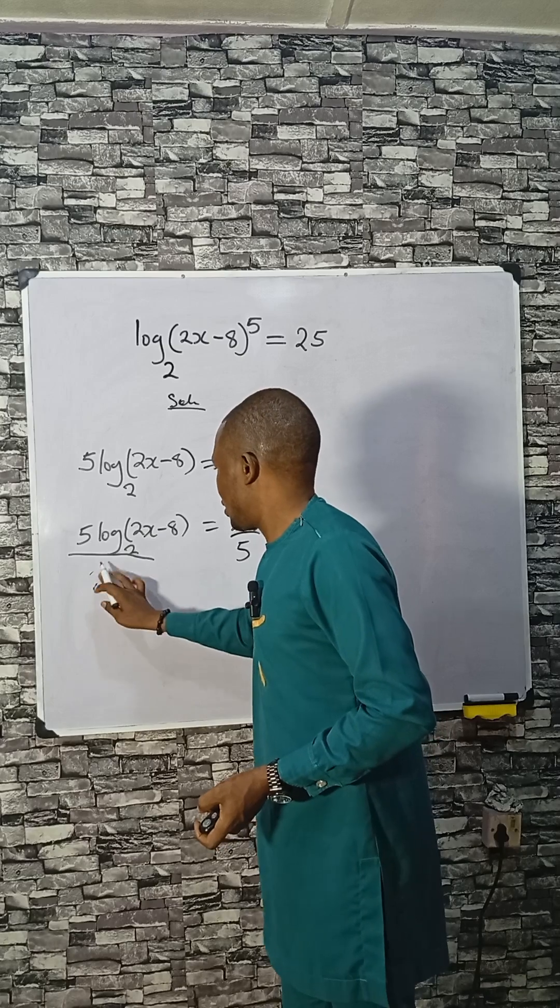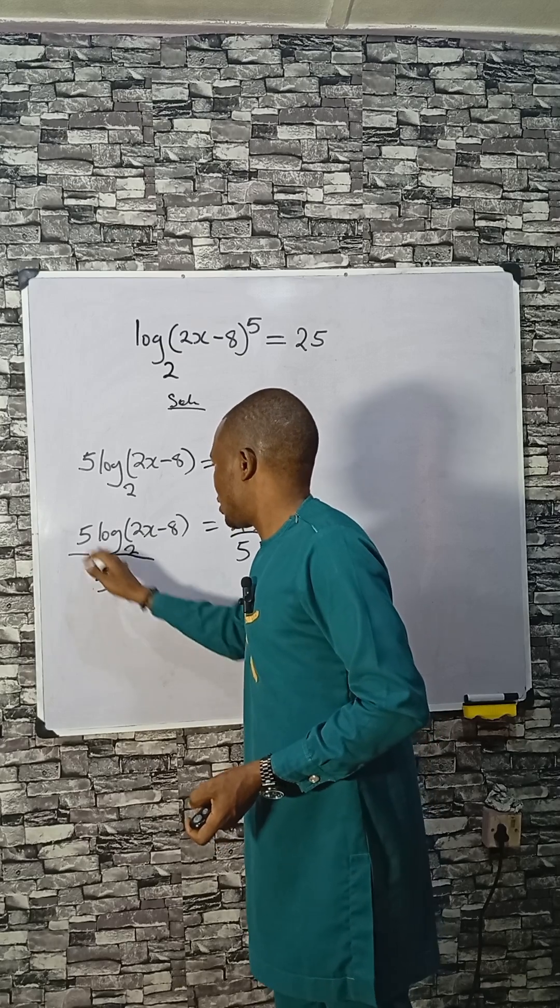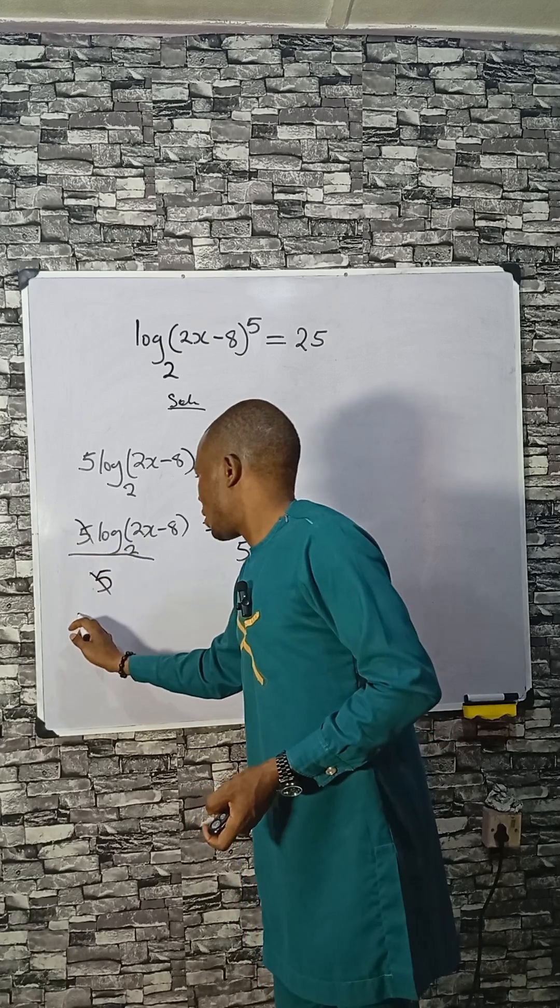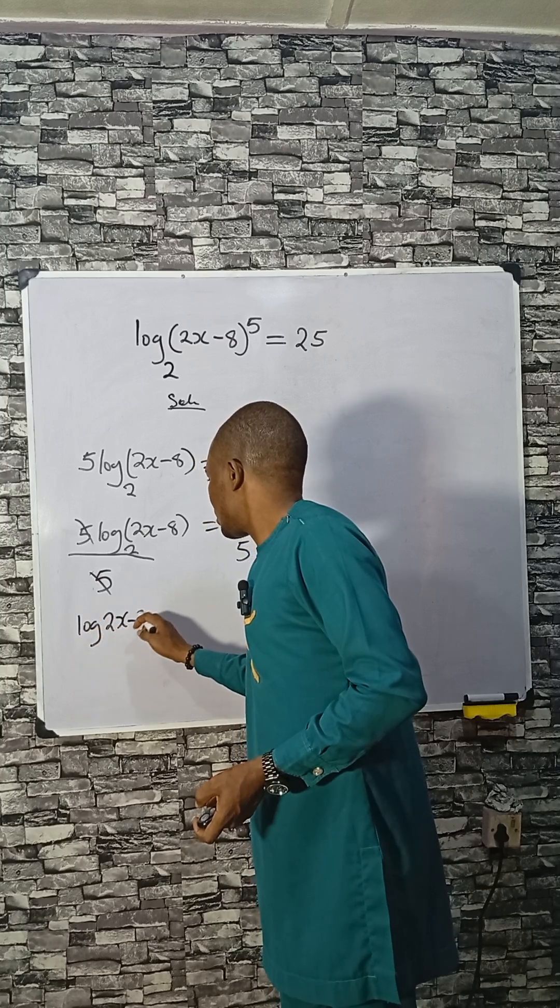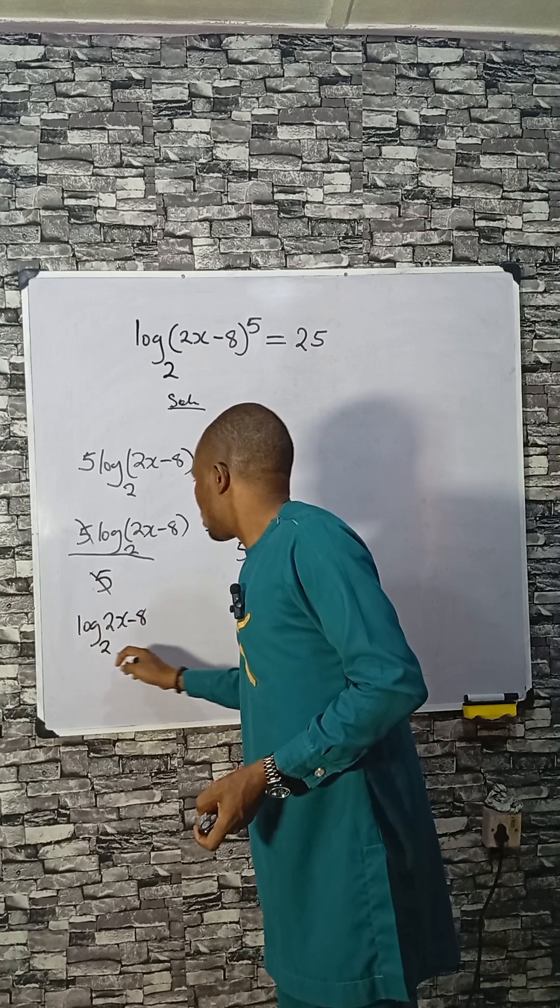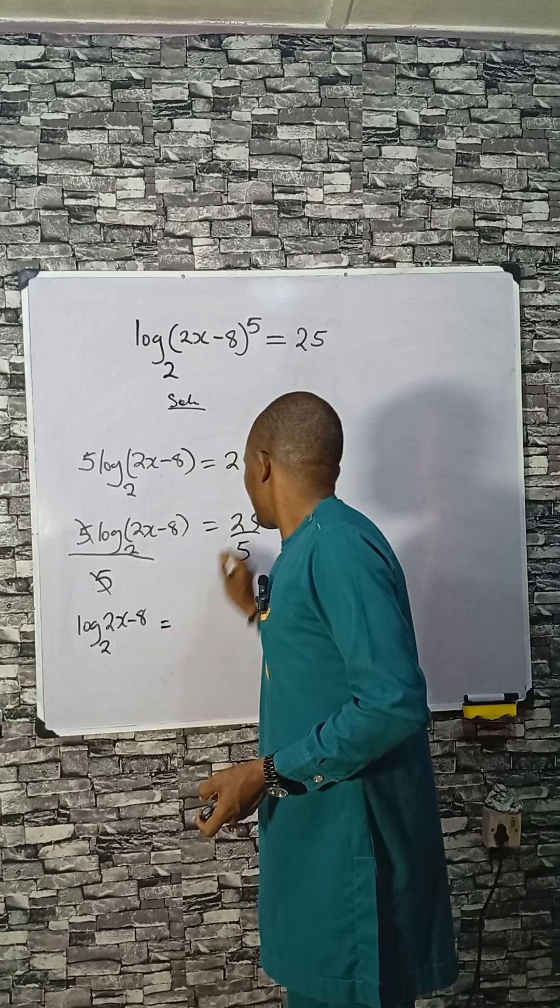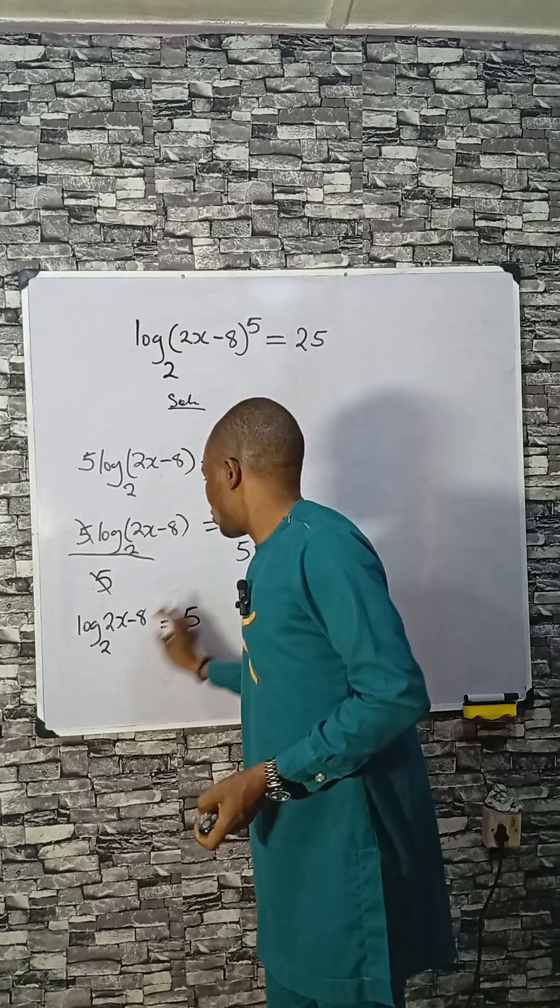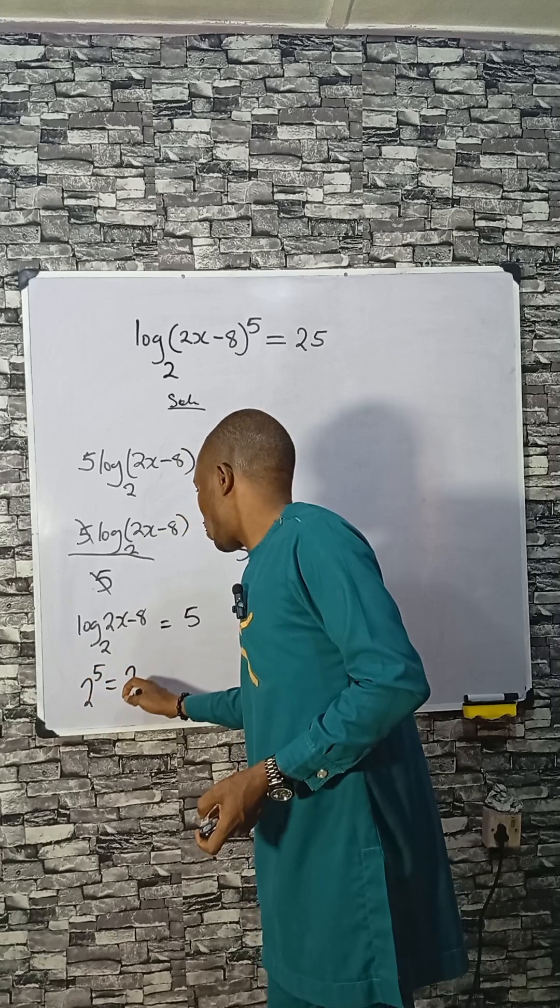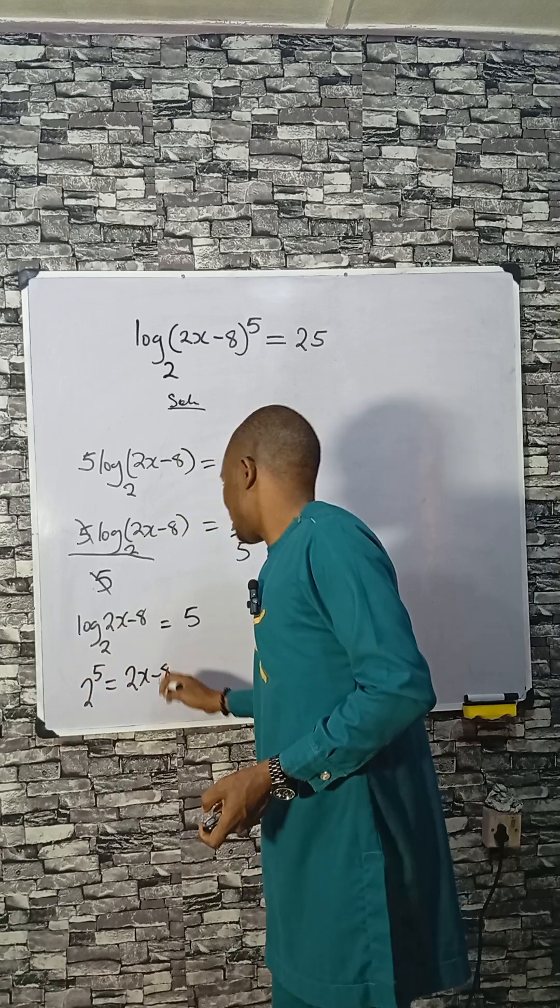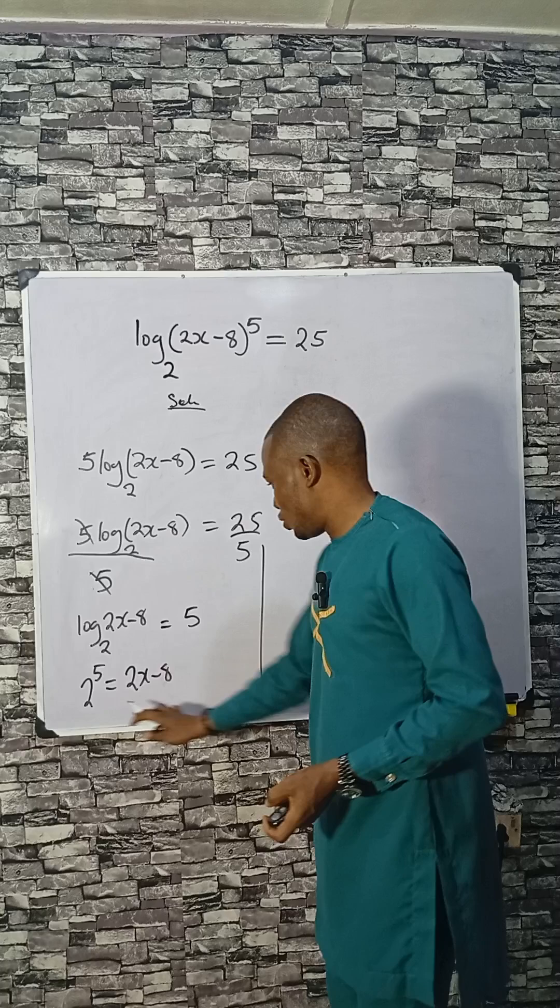No, this is 5 rather, so we have log(2x-8) base 2 equals 5. So 2 raised to the power 5 equals 2x minus 8. We continue from here.